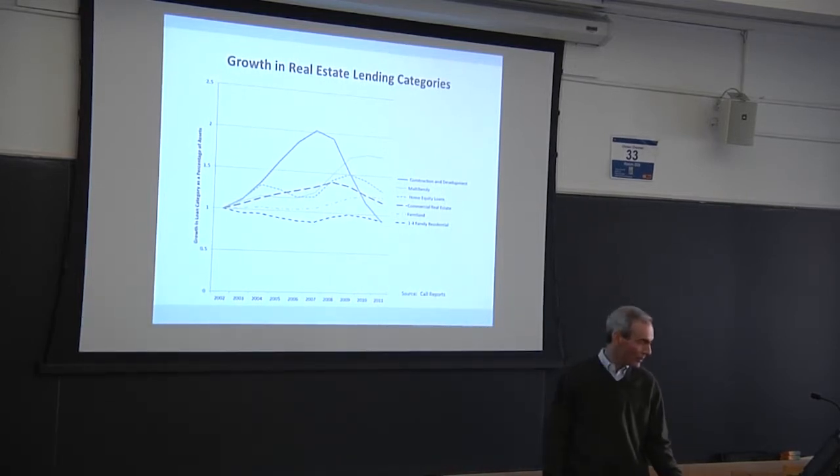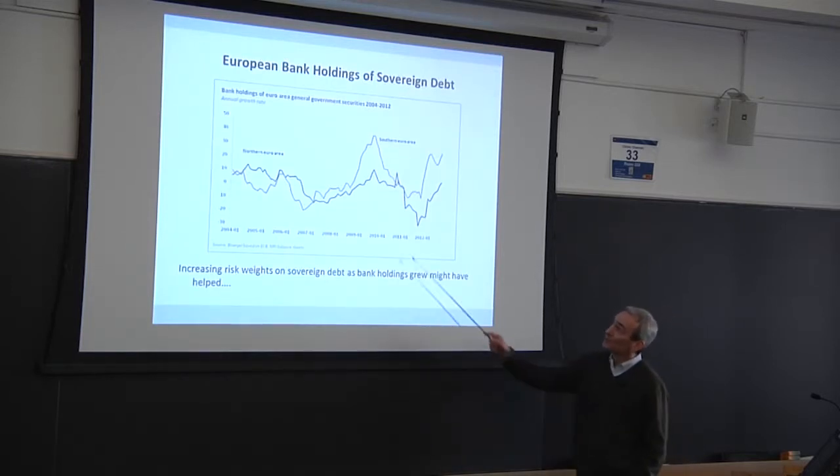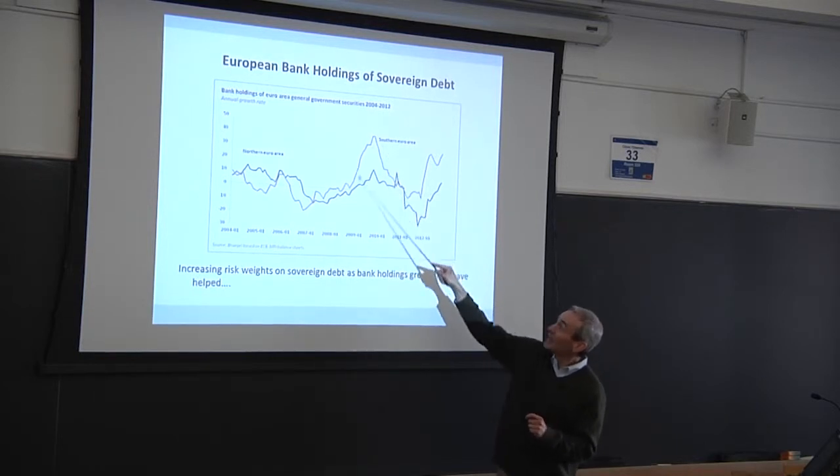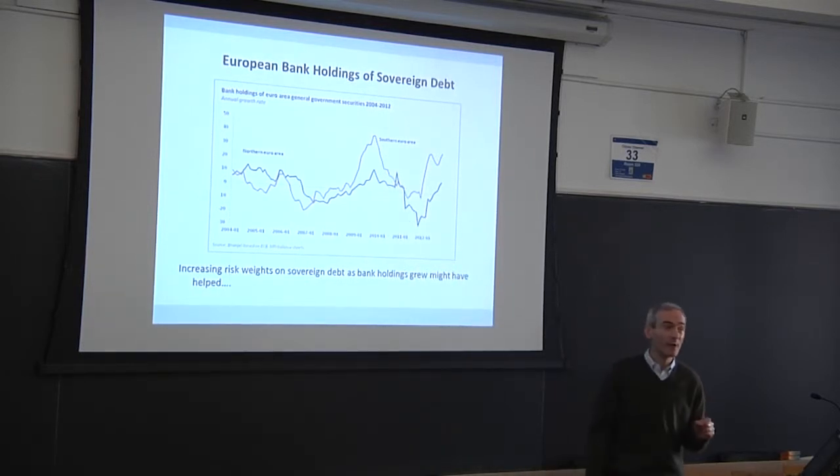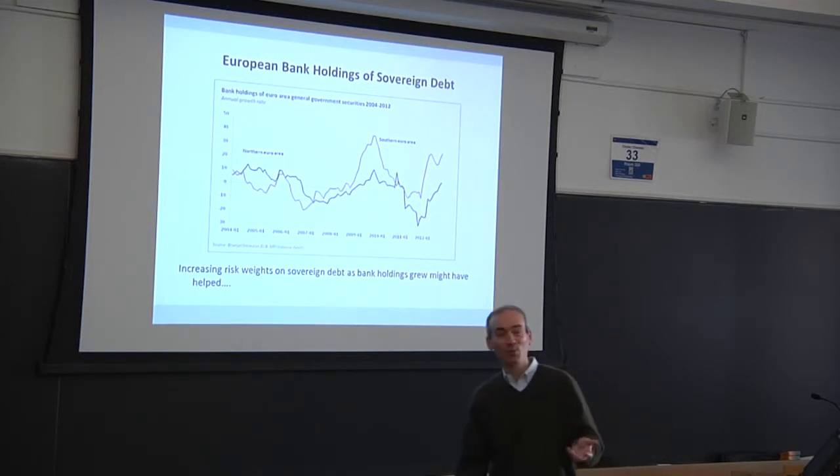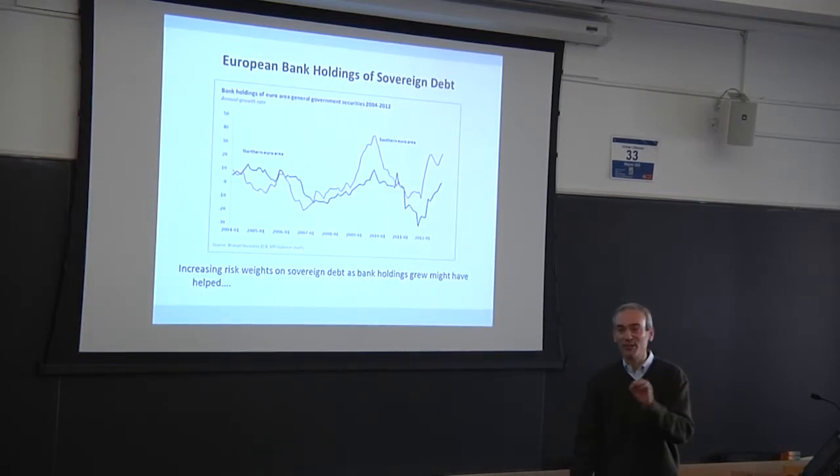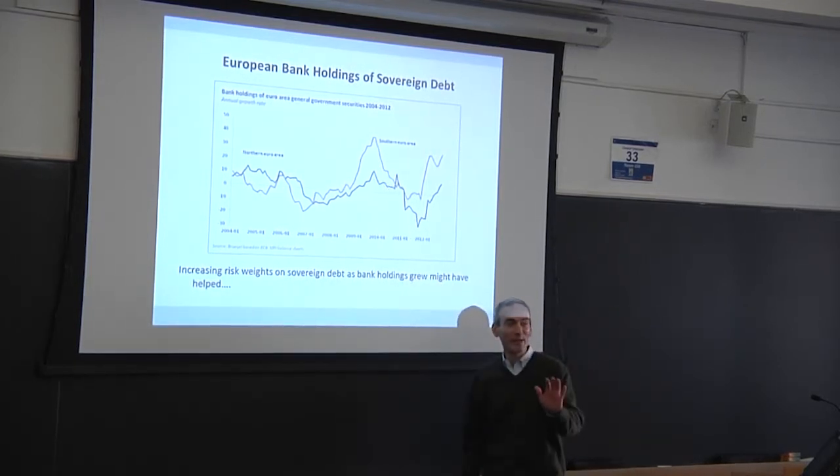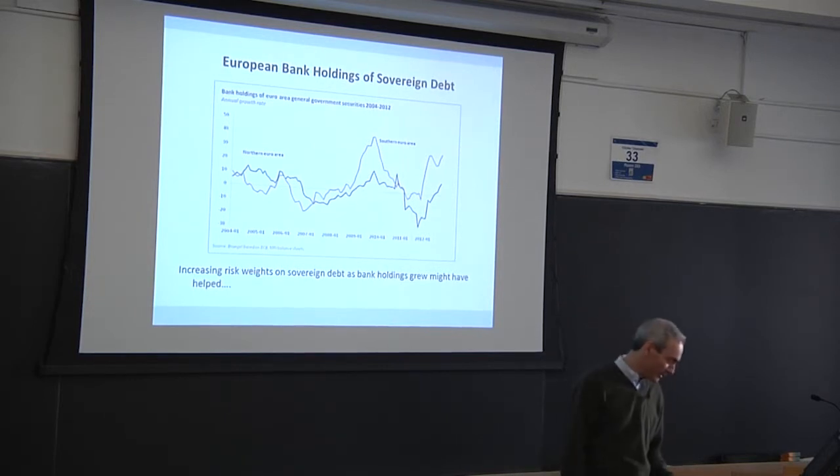And in Europe, this is the growth in holdings of European sovereign debt by banks in the Southern Euro area. And you can see how that takes off here, starting in 2009. What's the risk weight on Greece, Italy, Spain, Portugal? All zero, right? So, if you're a Southern Euro area bank, and you're very constrained by capital, and you're looking for profitable assets, what are you going to do? You're going to go to zero risk weight assets that are paying a high yield, right? And that's exactly what we're seeing here. Had risk weights pushed back on that, you would have had a less strong incentive for banks to move into that kind of asset.